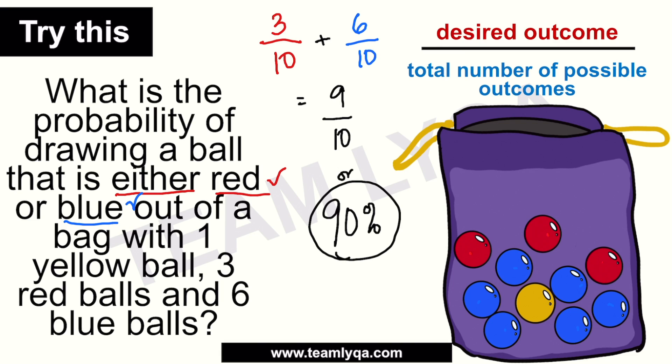So remember: when two outcomes are acceptable, add the probability of each. Another quicker approach — just count all the balls we want: nine over ten. Or, look at what we don't want: yellow, which is one over ten. Subtract from the whole: ten over ten minus one over ten also gives nine over ten, or ninety percent. Same result.